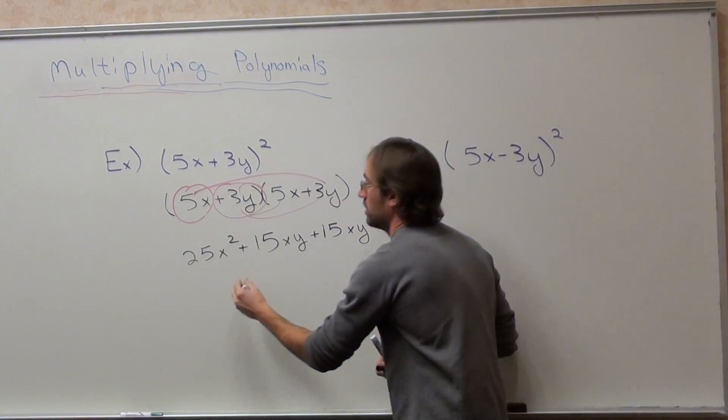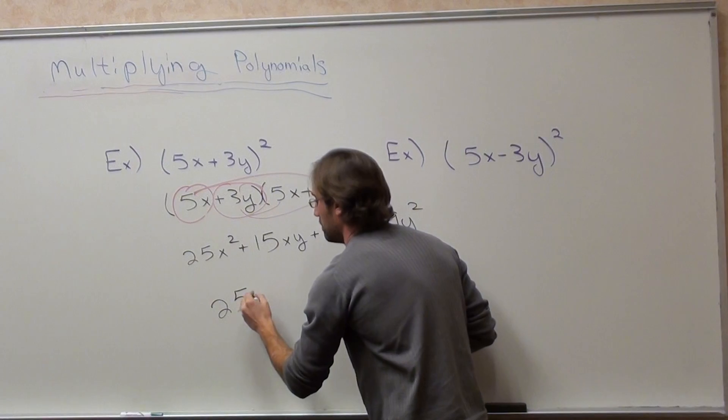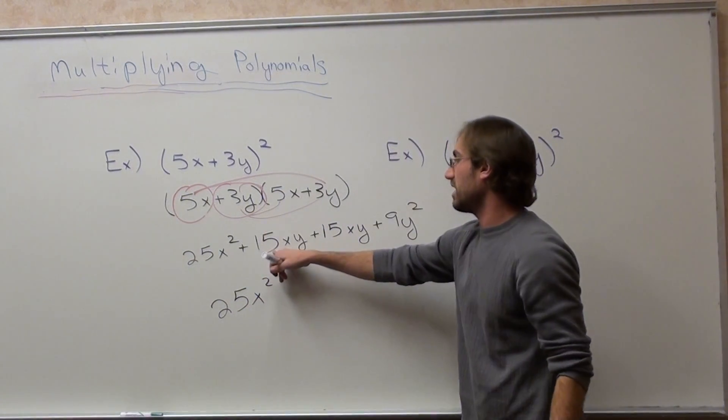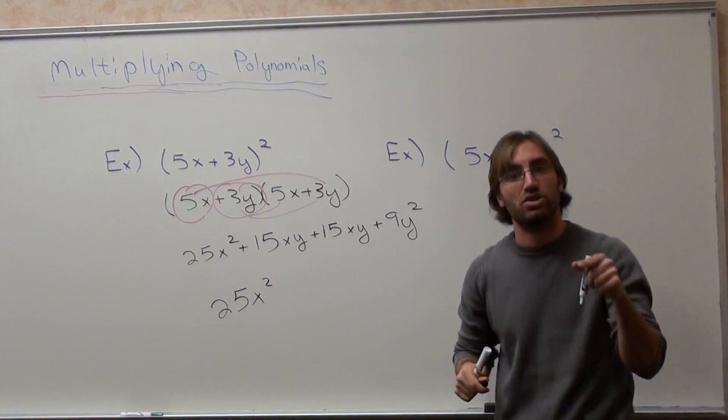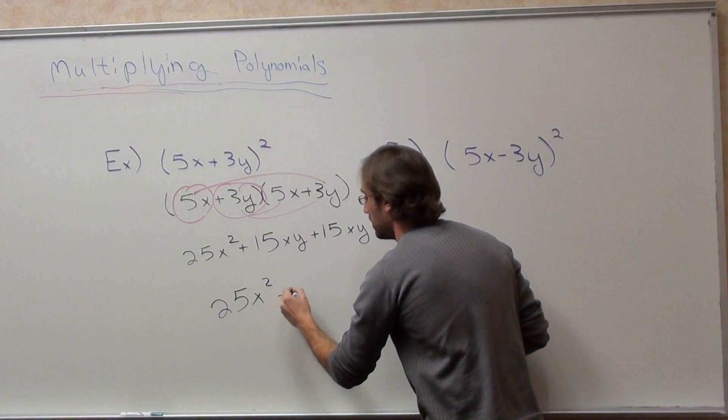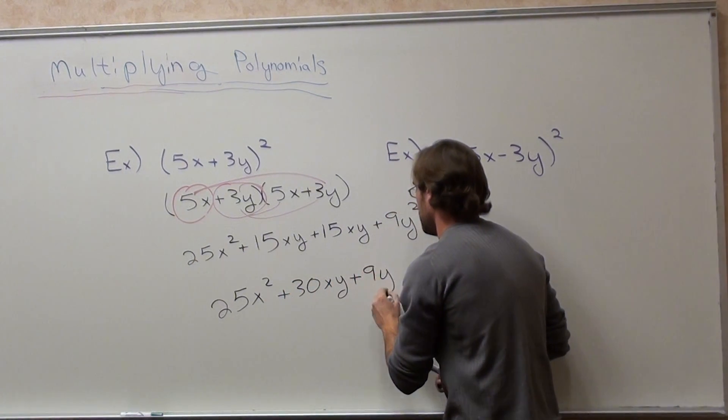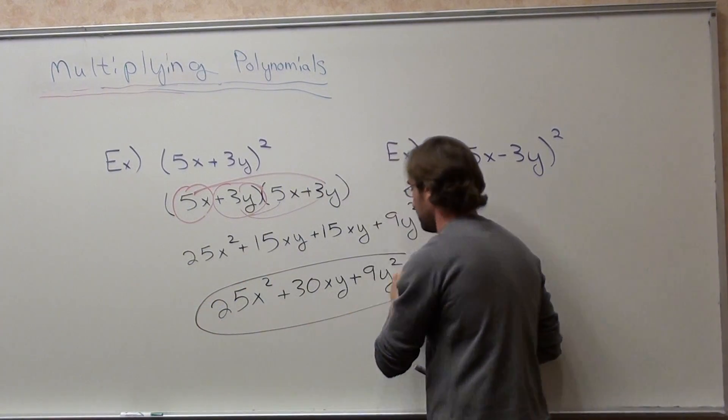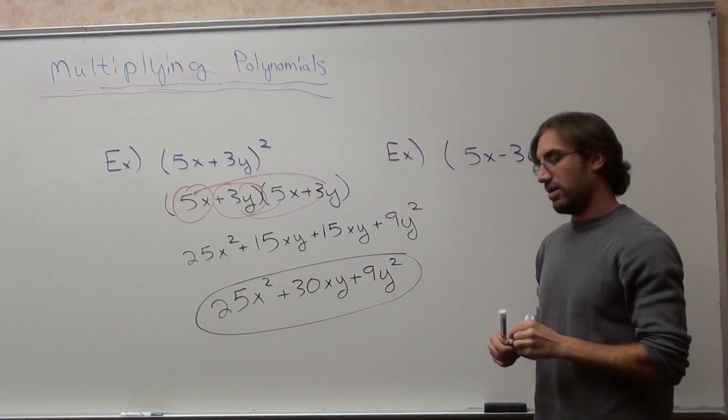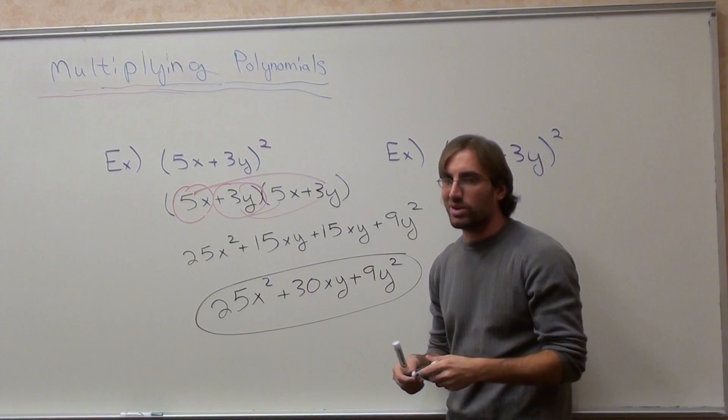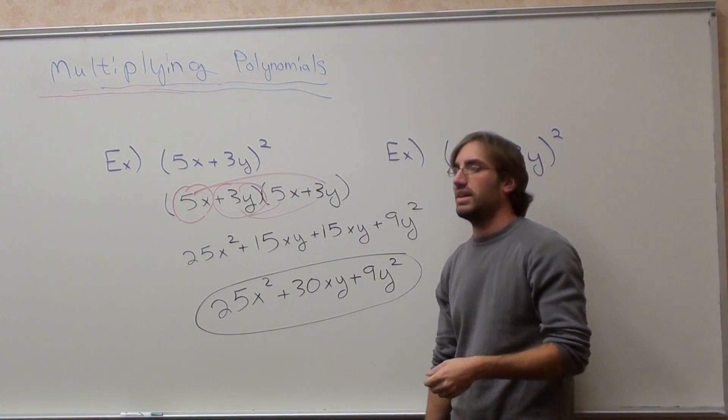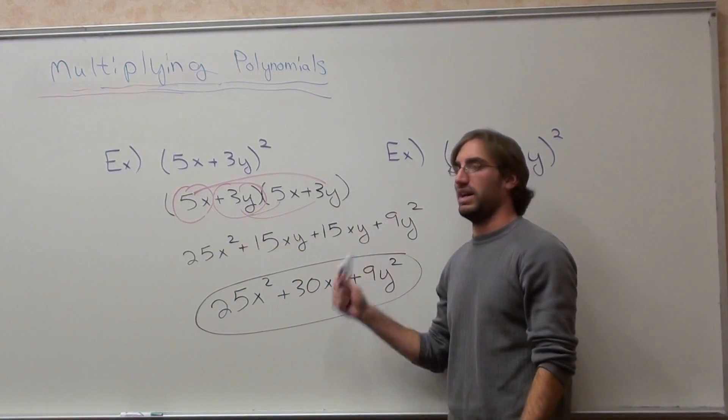Now, there are like terms here. 25x squared. 15xy's plus 15xy's is 30xy's plus 9y squared. Now, I'll go ahead and say what the relationship is between this and this, but it's just more confusing. Just multiply it out. That's the best way to do it.